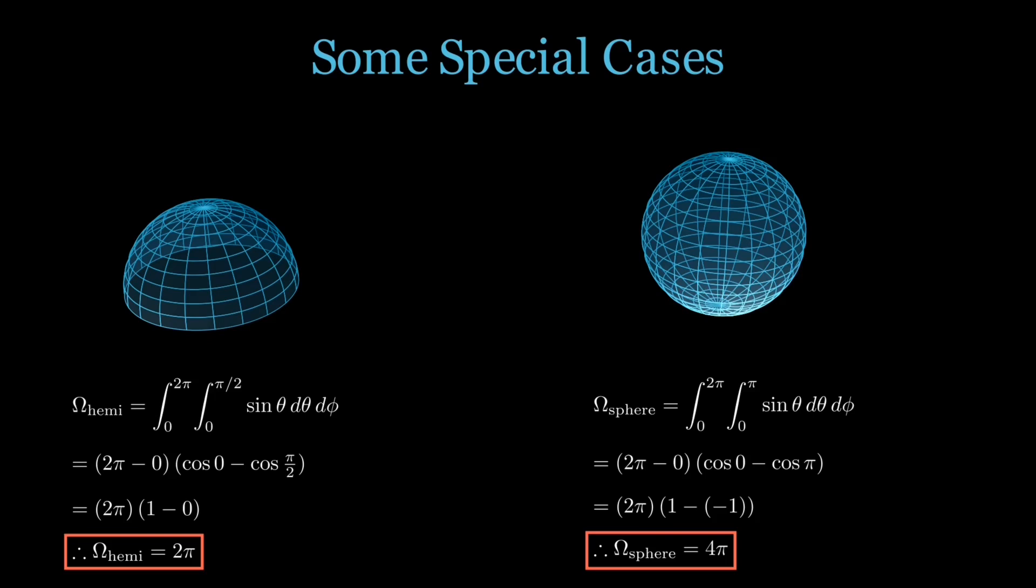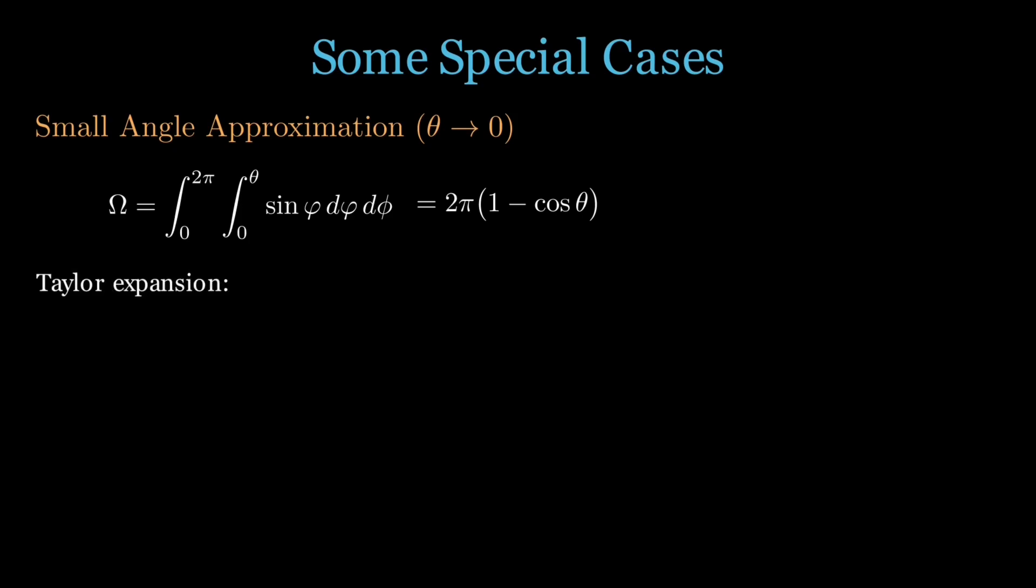Finally, let's see what happens when the angle theta is very small. We start once again from the double integral form with phi ranging from 0 to 2 pi and the radial angle from 0 to theta where theta is infinitesimal. This evaluates to 2 pi times 1 minus cos theta. But when theta is small, we can expand the cosine using a Taylor series. Cos theta expanded thus equals 1 minus theta squared over 2 factorial plus the higher order terms. For very small angles, we can ignore these higher order terms and approximate cos theta as 1 minus theta squared by 2.